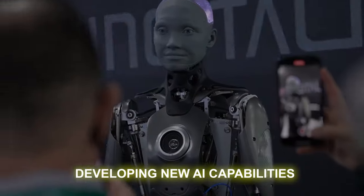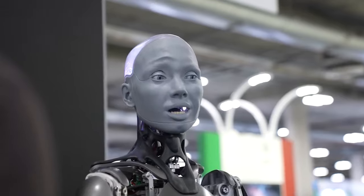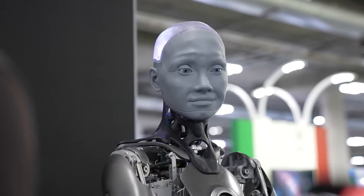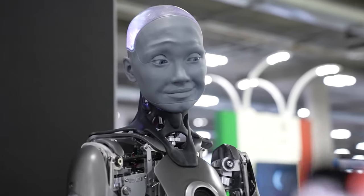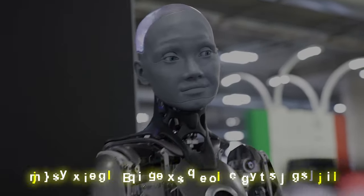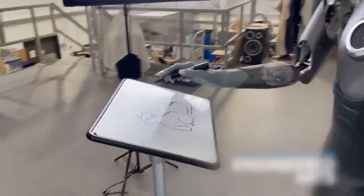Engineered Arts is working tirelessly to improve Amica's facial expressions, body language, and overall movement. Imagine watching a movie and seeing Amica as the lead actor, delivering lines with real emotion. Or perhaps attending a play where Amica's lifelike expressions steal the show. Secondly, developing new AI capabilities. Now, this is where things get sci-fi level cool. Engineered Arts wants Amica to not just mimic human emotions, but understand and respond to them. Imagine having a bad day, and Amica, sensing your mood, plays your favorite song or tells a joke to cheer you up that fits your style.